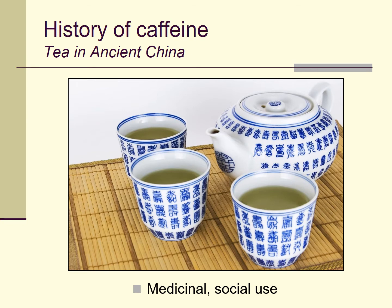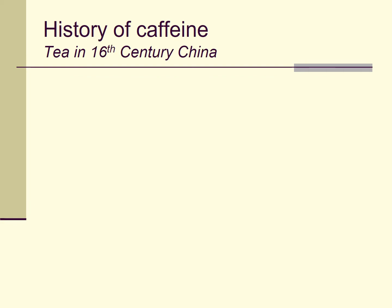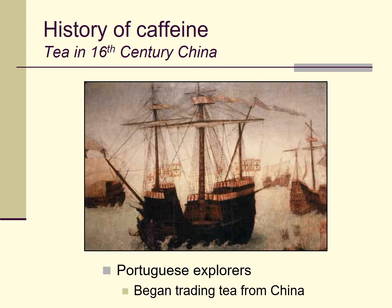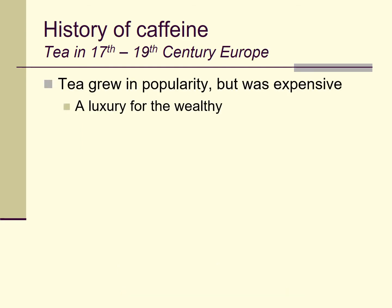A lot of history has been written about tea in China and elsewhere in Asia, but at the risk of being somewhat Eurocentric, we're going to skip ahead from ancient China to about the 15th or 16th century. This is when traders from Europe, especially Portuguese traders and explorers, began interacting with the Chinese and began trading tea and other commodities from that region. Tea grew in popularity in Europe during the following centuries, but it was expensive to import all the way from China, and thus was mostly a luxury for the very wealthy.